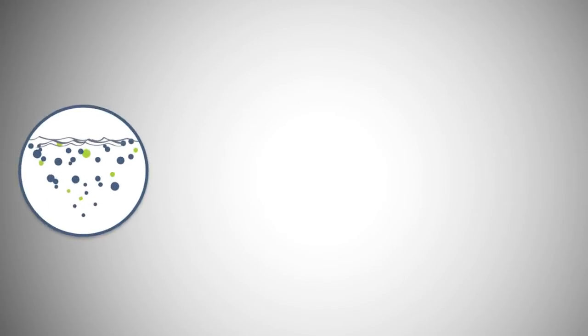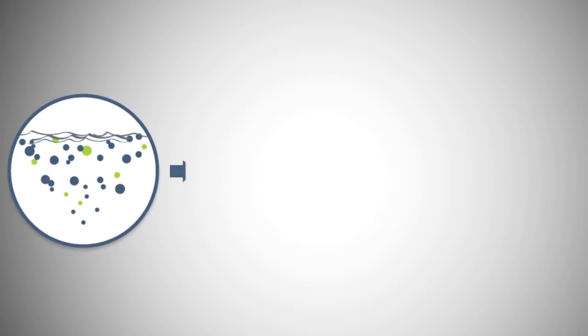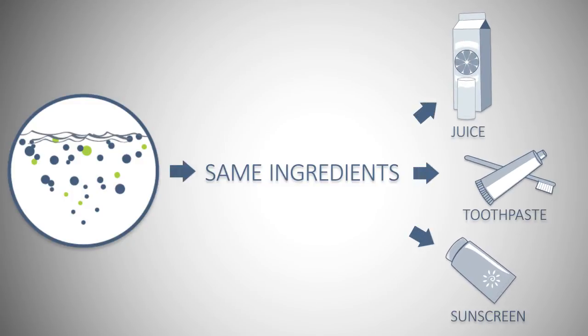Dispersants are a key tool that can be used to help with the natural removal process. Today's dispersants are made up of ingredients that may be found in many household products and are one of the most effective response tools as they speed up the natural biodegradation of oil.